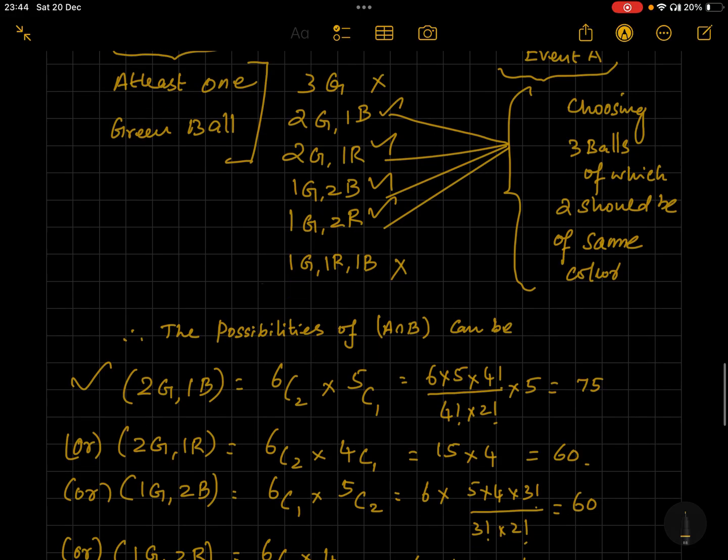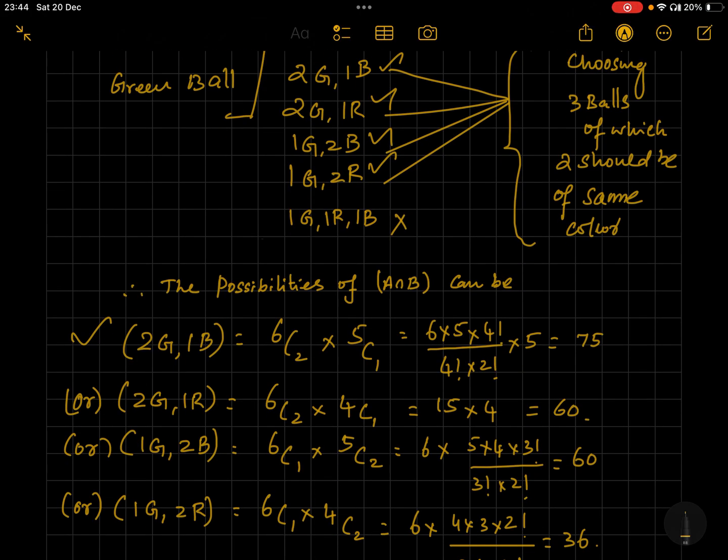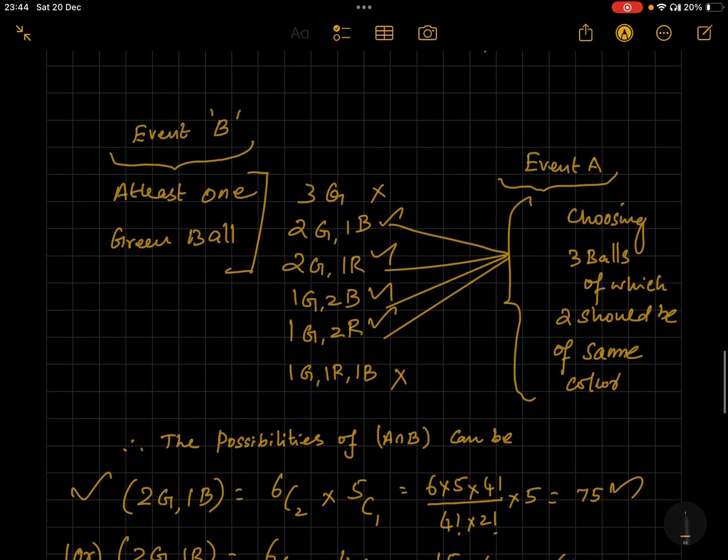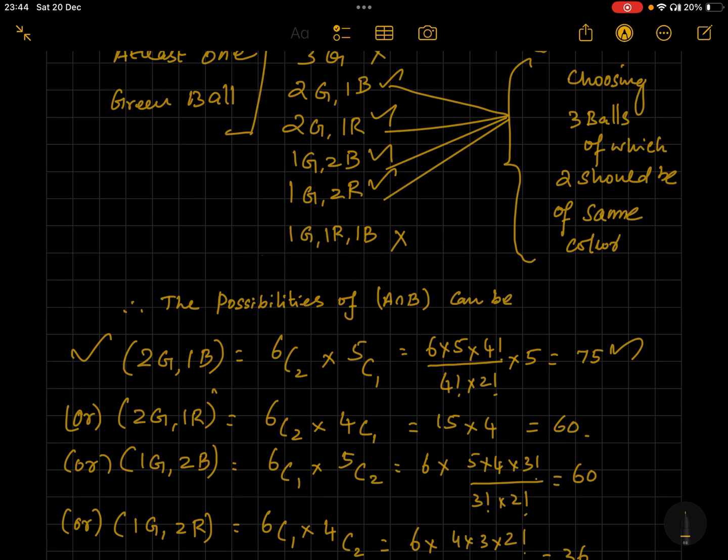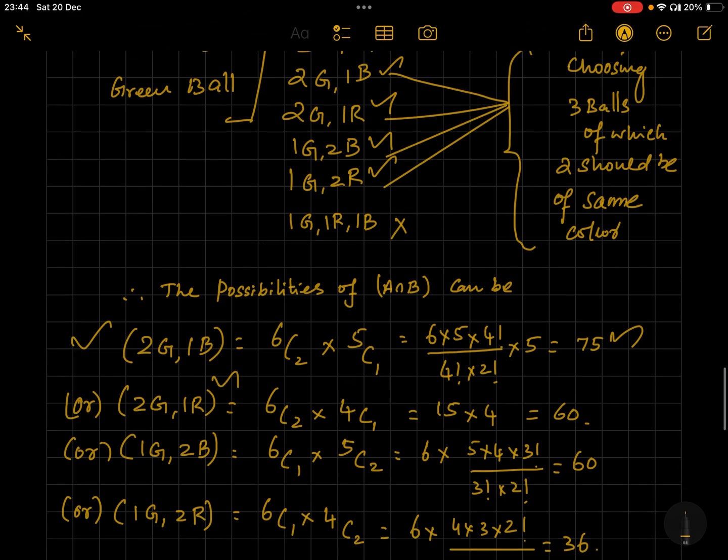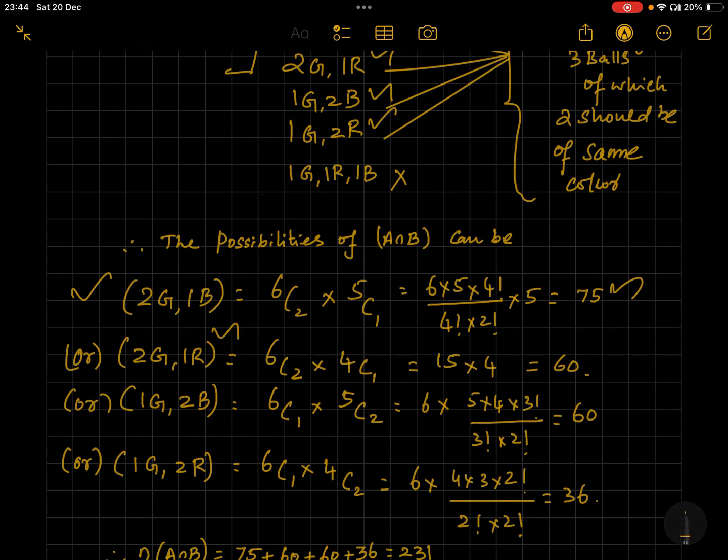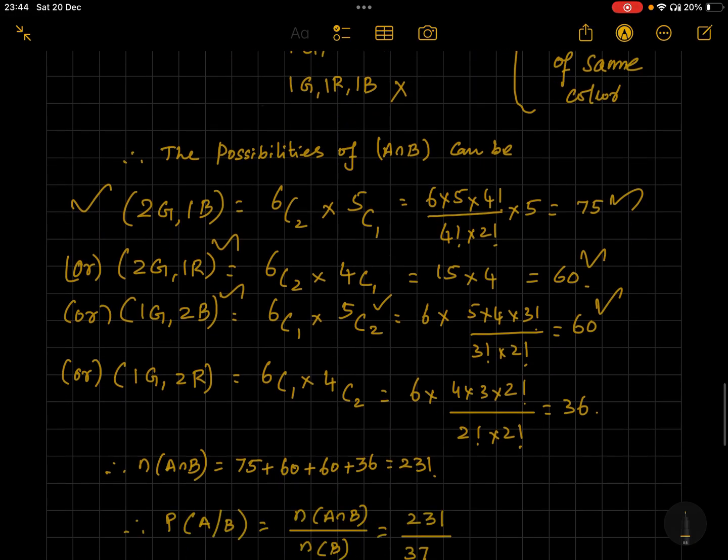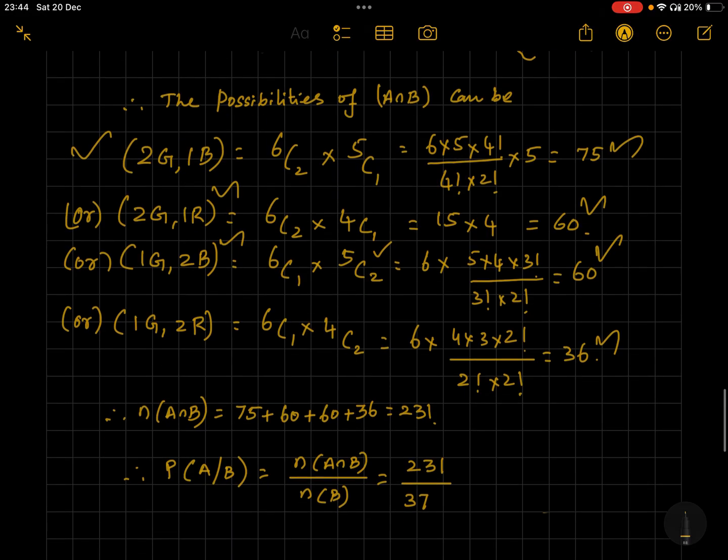So the possibilities of A∩B can be either two green and one blue, which can be given by 6C2 × 5C1 = 75, or two green and one red, 6C2 × 4C1, and that's why we are using the multiplication, which is equal to 60. One green and two blue, 6C1 × 5C2, which is equal to 60. One green and two red, 6C1 × 4C2, which is equal to 36. Therefore we have four options.